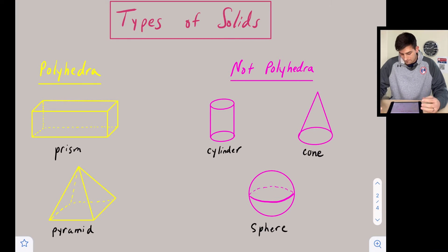For not polyhedra, notice all three of these shapes contain a circle. A circle is not a polygon because it doesn't have straight sides. So any shape that has circles helping make it up—for example, a cylinder, a cone, or a sphere—would be considered not polyhedra.